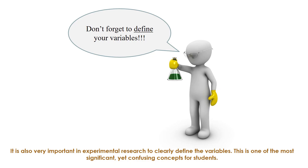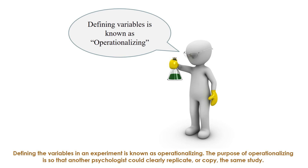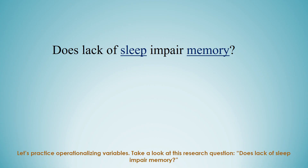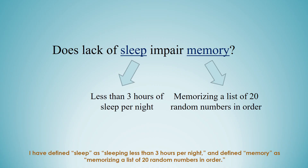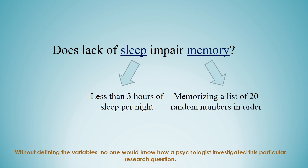It is very important in experimental research to clearly define the variables — this is one of the most significant yet confusing concepts for students. Defining the variables in an experiment is known as operationalizing. The purpose of operationalizing is so that another psychologist could clearly replicate or copy the same study. For example, with the research question 'does lack of sleep impair memory?', a psychologist must clearly define sleep — such as sleeping less than 3 hours per night — and memory, such as memorizing a list of 20 random numbers in order.